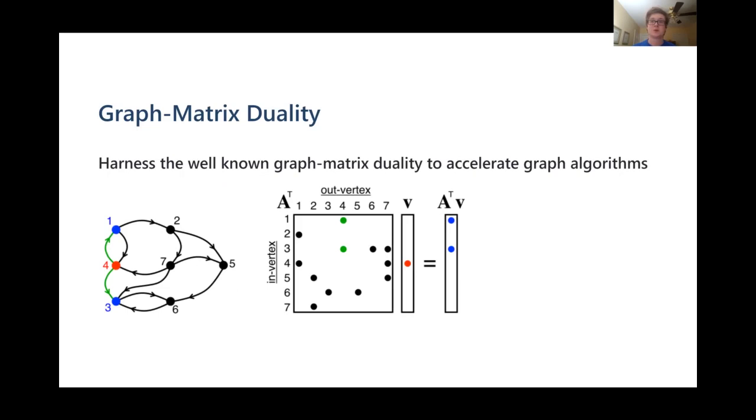The Graph Matrix duality is a very well-understood map between two of the most foundational data structures in computer science. At its most basic, this relationship is found in the adjacency matrix of a graph, and the real power comes from operations like matrix multiplication acting as graph traversals. Each numbered vertex on the graph is present on both axes of the matrix, and each element denotes the presence of an edge.